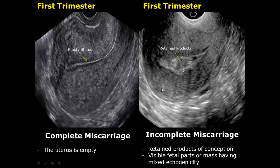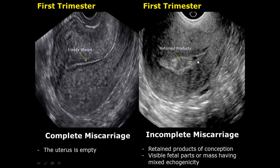A complete miscarriage occurs when all the fetal parts and pregnancy tissue have been expelled completely from the uterus and the uterus is empty. In an incomplete miscarriage, there will be retained products of conception left behind in the uterus — these can be fetal parts or some remaining placental tissue, and they can be of mixed echogenicity.